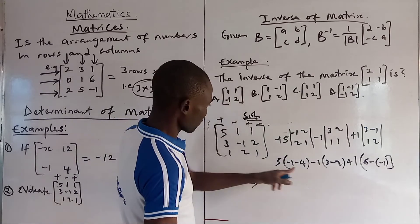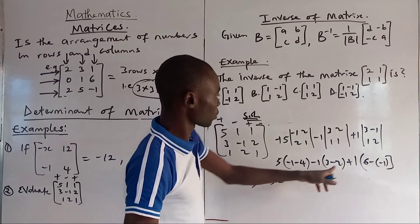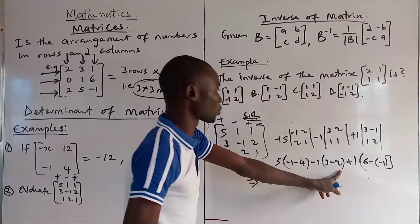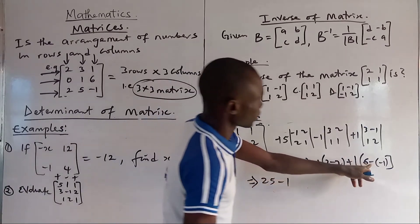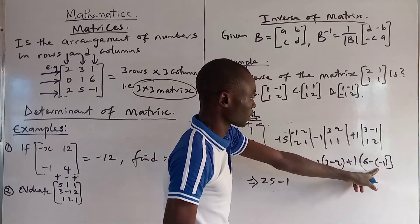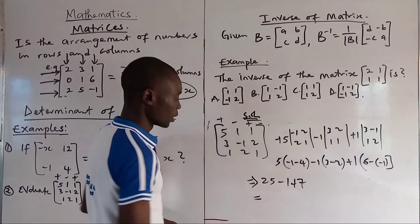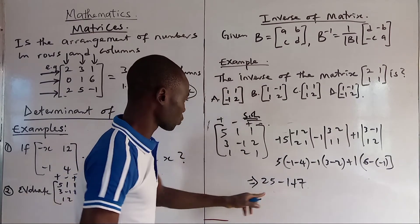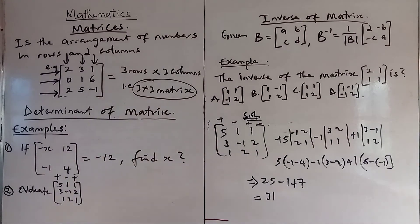We can continue with this. This is minus 5. If this is minus 5 times 5, that is 25. Minus 3 times 1 is 1. 3 minus 2 is 1. 1 times minus 1 is minus 1. Then 6 plus 1 now is 7. 7 times 1 is plus 7. So doing this, 7 minus 1 is 6. 6 plus 25 is going to be 31.